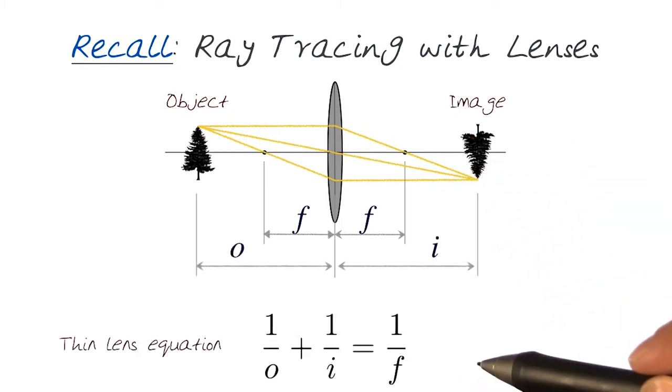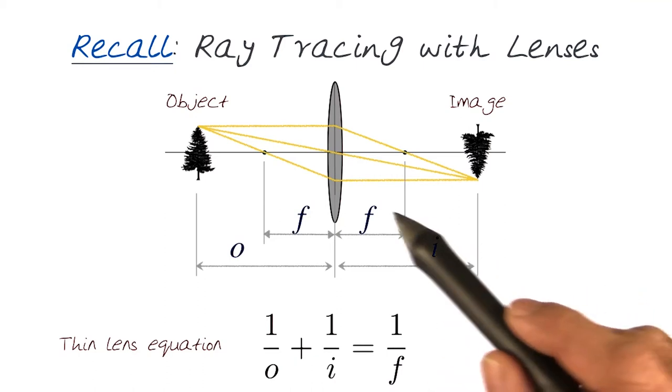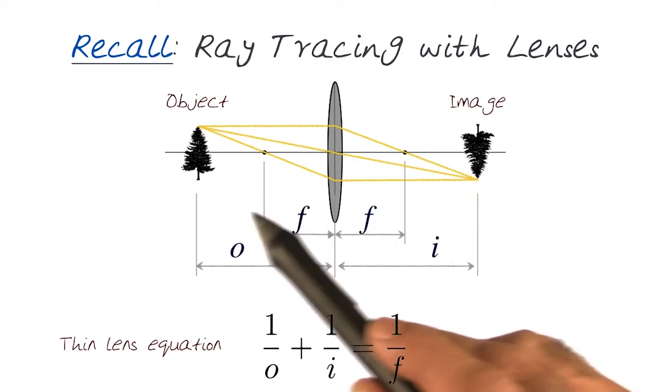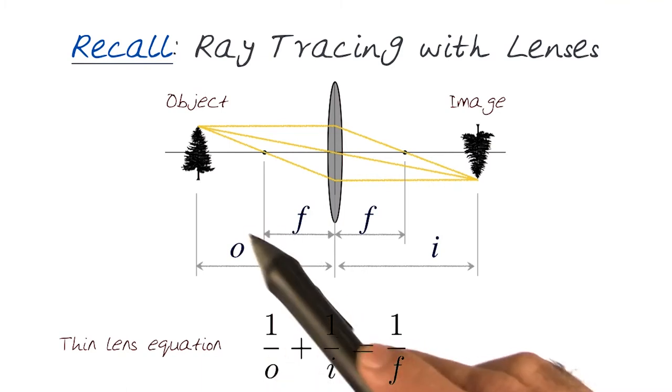I also introduced in the last lecture the concept of the thin lens equation, which is shown here. It relates the focal length of an image to the distance of the image on this side of the lens and where the object is on the other side.